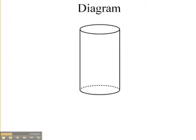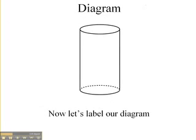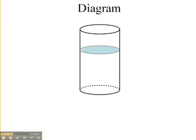Now we draw our diagram. So here's our cylinder, and now we need to label our diagram. So let's make this the height of the water, and the height of the water is changing. Anything that's changing, we need to label with a variable. So we're going to call the height of the water h. Now we also have a radius of our cylinder, so let's call the radius r.